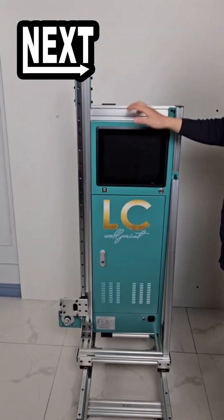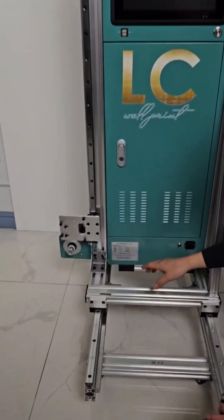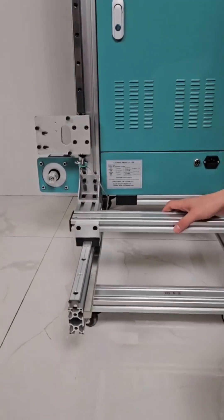The next stage of assembly. We need to install the drive motor so that the printer itself does not ride on the rails.